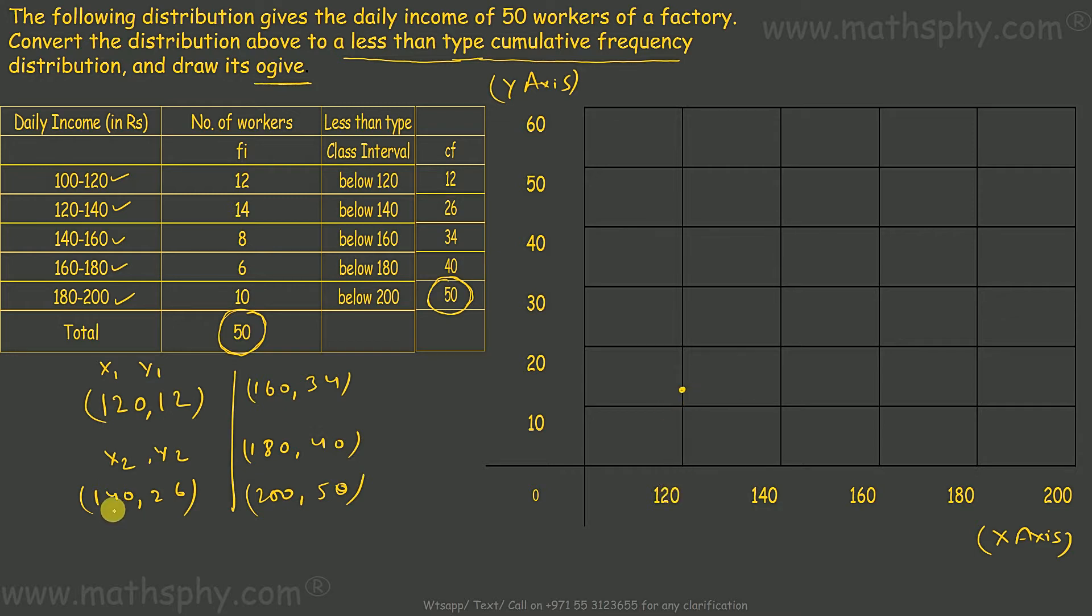Second is 140, 26. This is 140. 26 will be slightly above halfway between 20 and 30. So, you can take like this. This is second coordinate x2, y2, 140, 26.